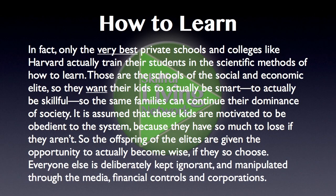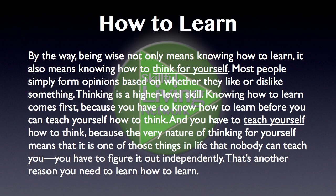Only the very best private schools and colleges, like Harvard, actually train their students in the scientific methods of how to learn. Those are the schools of the social and economic elite, so they want their kids to actually be smart and skillful so the same families can continue their dominance of society. The offspring of the elites are given the opportunity to actually become wise. Everyone else is deliberately kept ignorant and manipulated through the media, financial controls, and corporations. Being wise not only means knowing how to learn — it also means knowing how to think for yourself. Most people simply form opinions based on whether they like or dislike something; thinking is a higher-level skill.